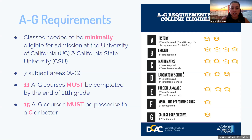The sixth subject area is the F section: visual and performing arts. Students must complete one year of a visual and performing arts course. The last subject area is the G section: the college prep elective. Students must complete one year of a college prep elective course. As you can see, we have a flyer on the right that lists all the subject areas and how many years are required.